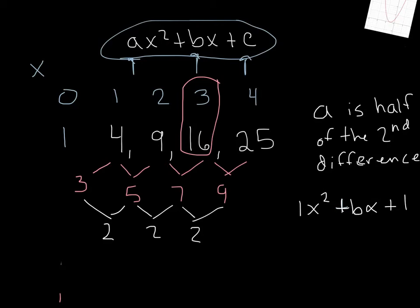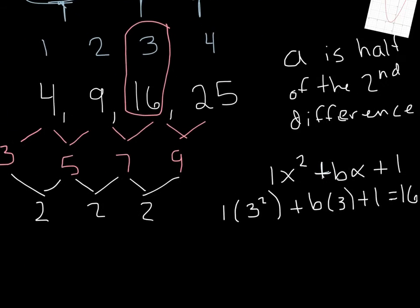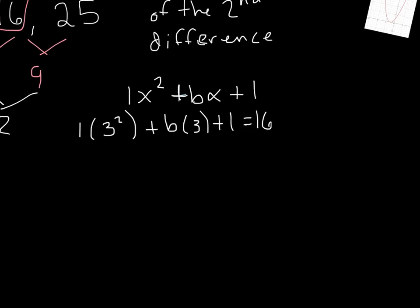So when x is 3, we know it should all equal 16. So we can set up an equation. So we'll plug this in here. And as we plug it in, we want to plug in 3 in the place of x. So 1 times 3 squared plus b times 3 plus 1, we know has to equal 16. Because that was the number in our sequence. I'm going to move all this up here so we can see a little bit better.